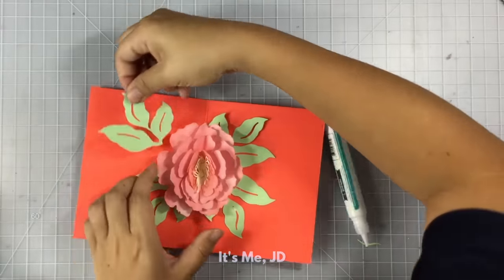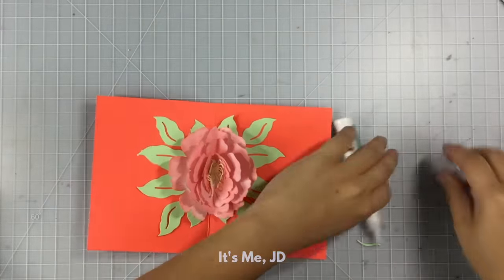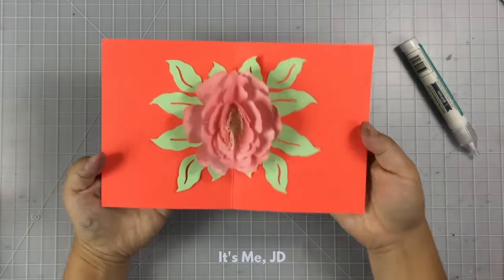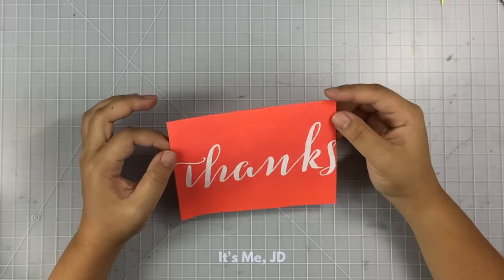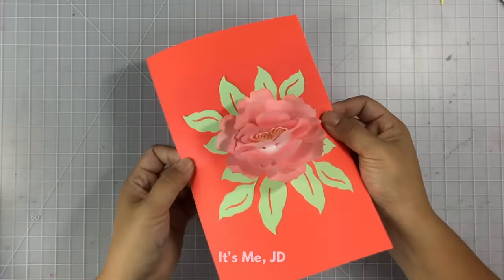Now I will adhere the extra leaves that came with the die set and there's still plenty of space to write a sentiment within this card. I heat embossed a large sentiment on the front of the card and now this card is finished.